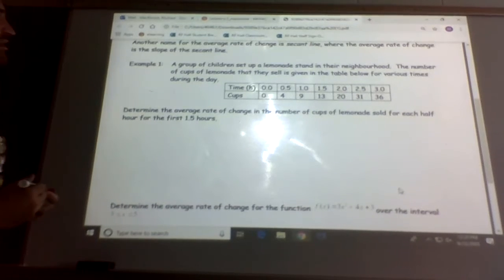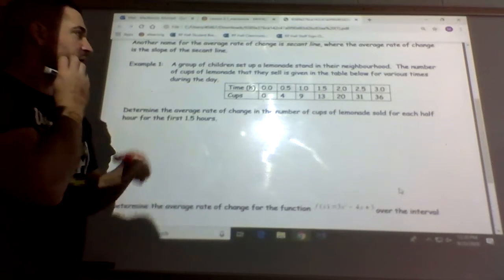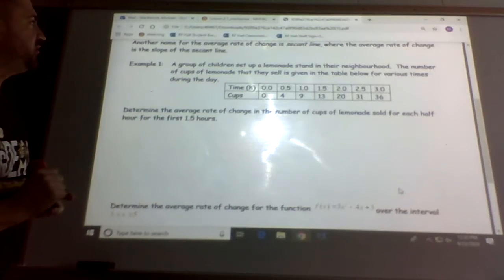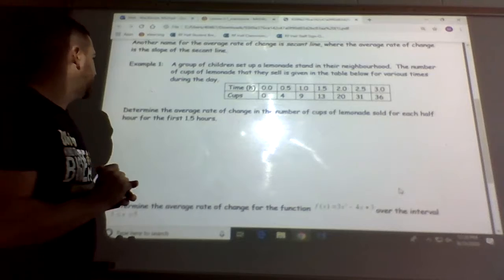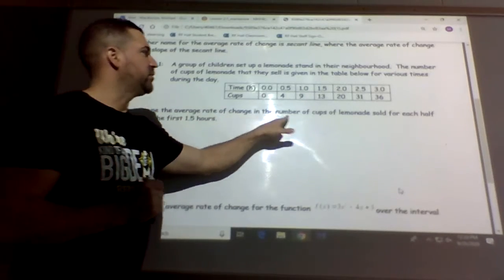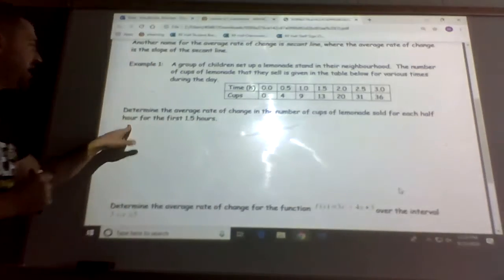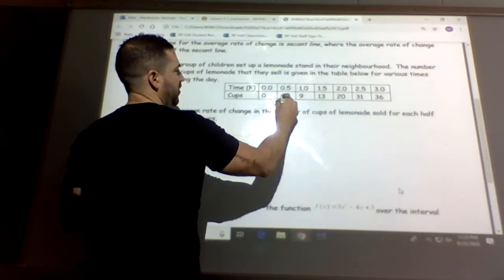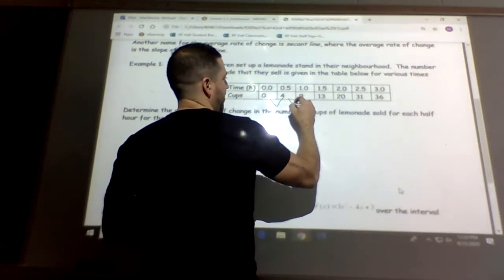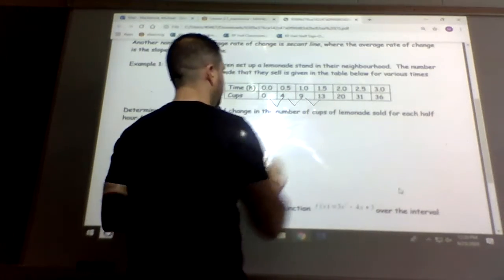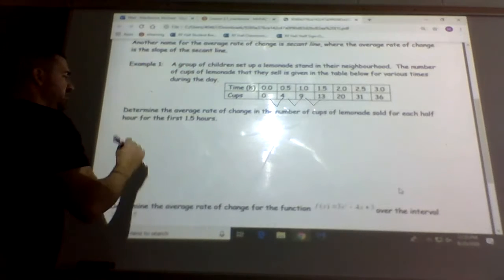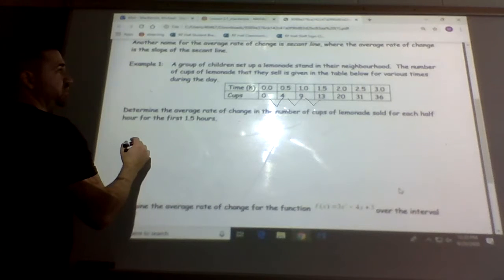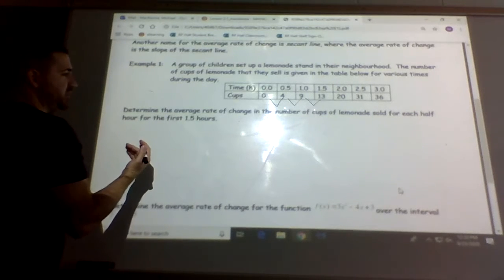Alright, number one. A group of children set up a lemonade stand in the neighborhood. The number of cups of lemonade that they sell are given in the table below for the various times during the day. Determine the average rate of change in the number of cups of lemonade sold for each half hour for the first hour and a half. So we're going to do for the first half hour, and then from half hour to one, and then from one to one and a half. So from zero to the first half hour, we're finding the slope or the average rate of change.